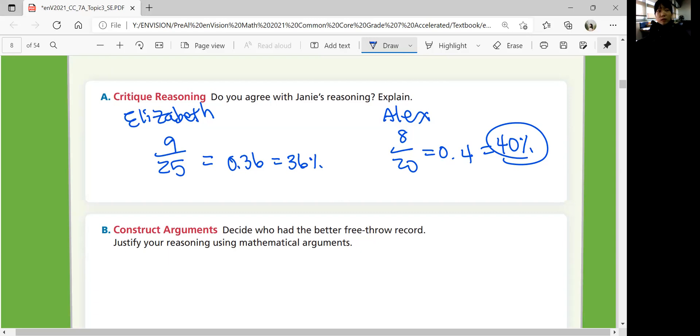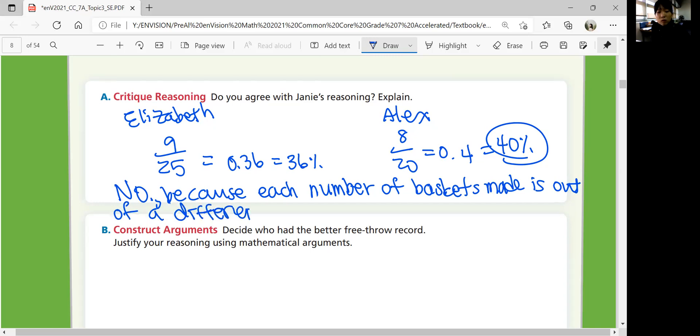Decide who has a better throw record. Justify your reasoning using mathematical arguments. For A, you're going to say no, because each number of baskets made is out of a different number. In order to be fair, they need to compare from the same number of free throws.